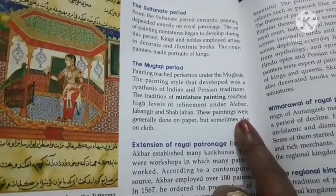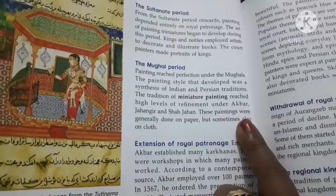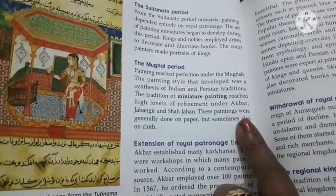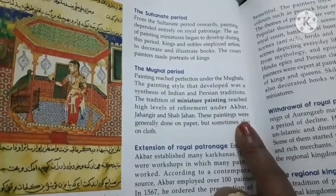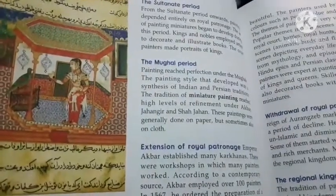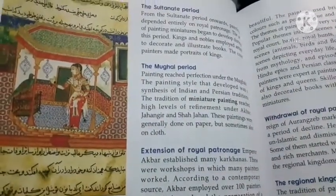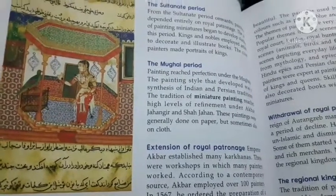Kings and nobles employed artists to decorate and illustrate books. The court painters made portraits of kings. This developed during the same period, and many people gained employment through book illustration and related work.